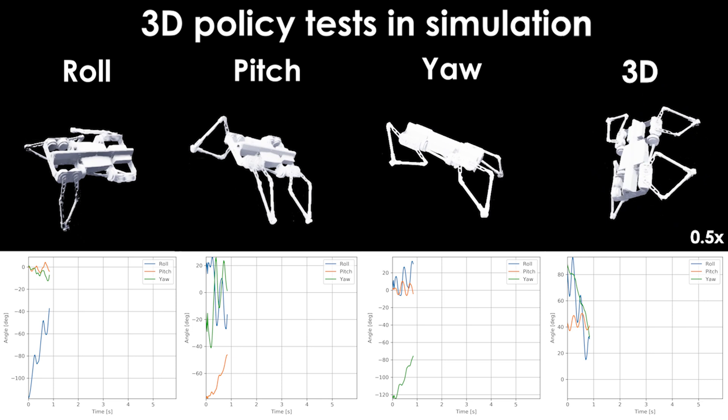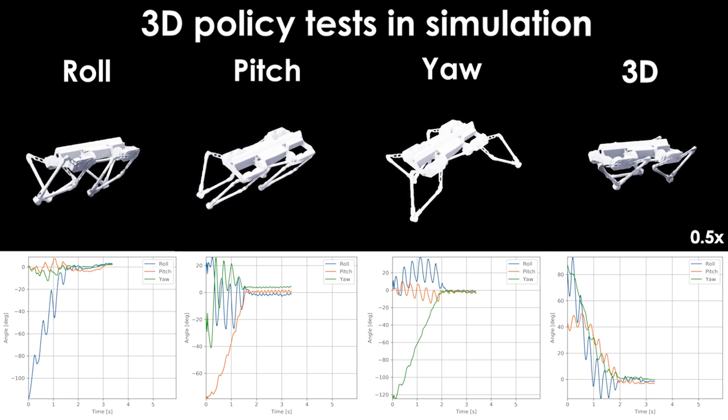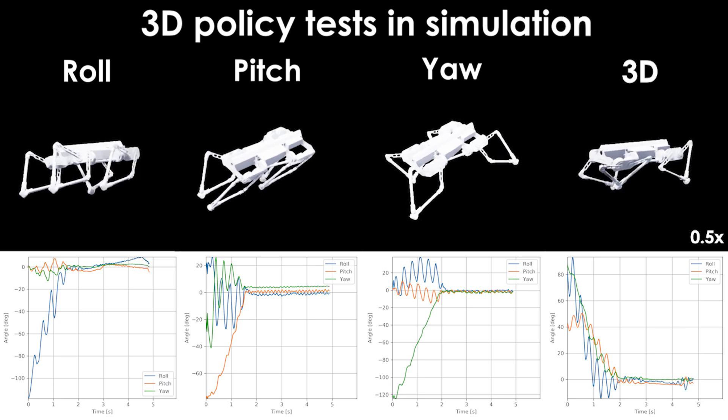The trained 3D policy underwent simulation and evaluation by introducing large orientation errors in roll, pitch, and yaw individually and concurrently in a 3D scenario, converging to the target orientation.